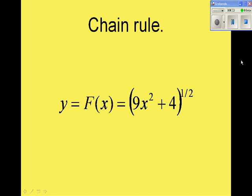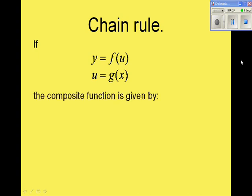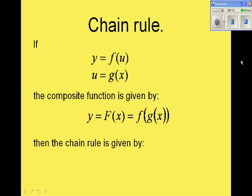Before we can apply the chain rule, we must represent y as a function of another function. That means we must use what we learned in composition of functions. Remember that if y equals f of u and u equals g of x, we have a composite function given by f of g of x. f is a quantity that depends on g, and g in turn depends on x. The chain rule is given by the following expression.